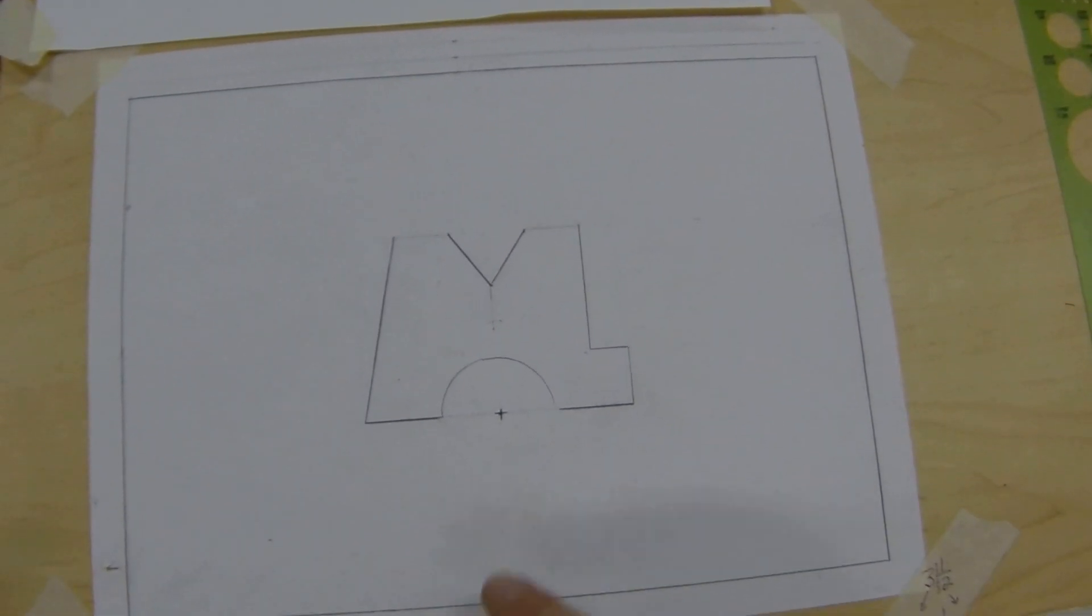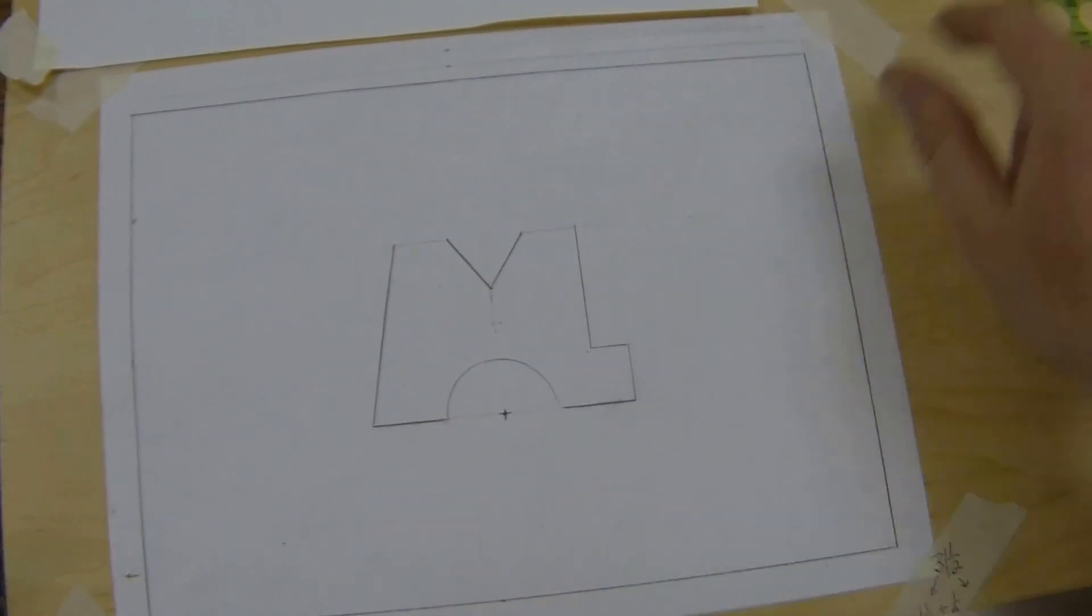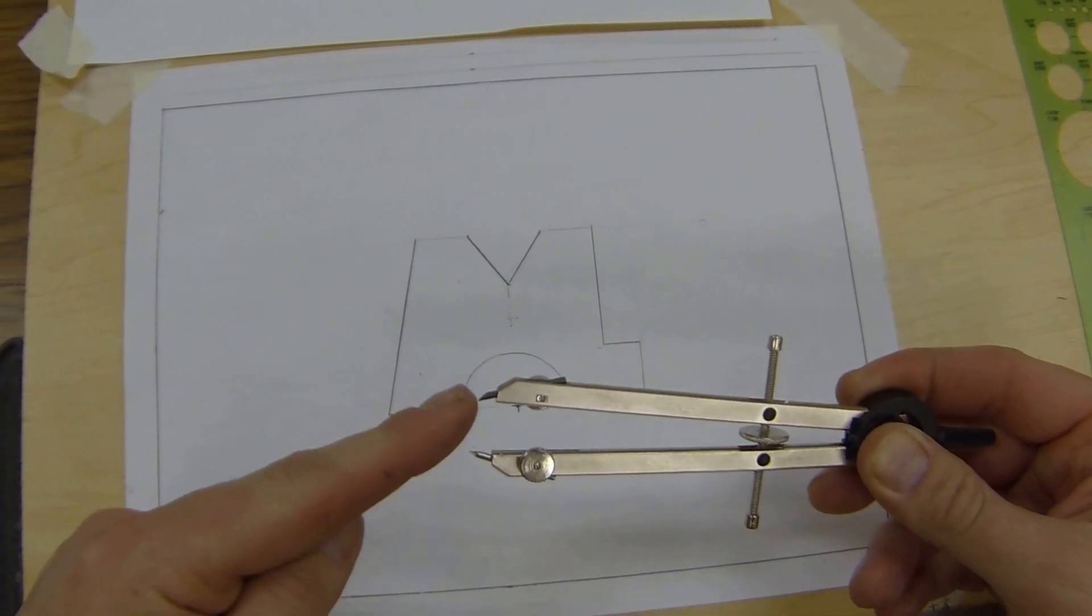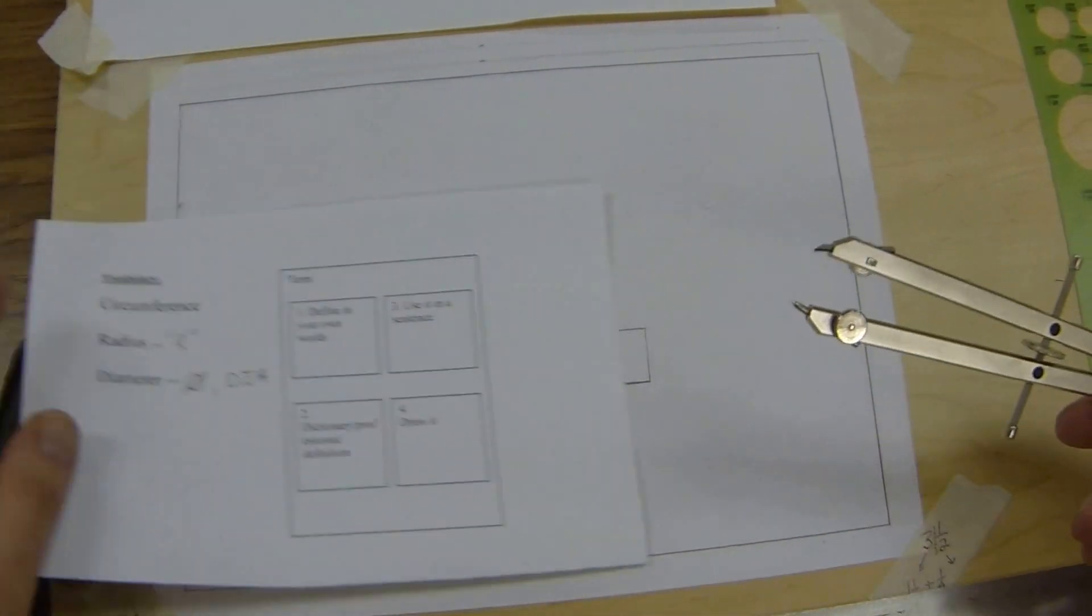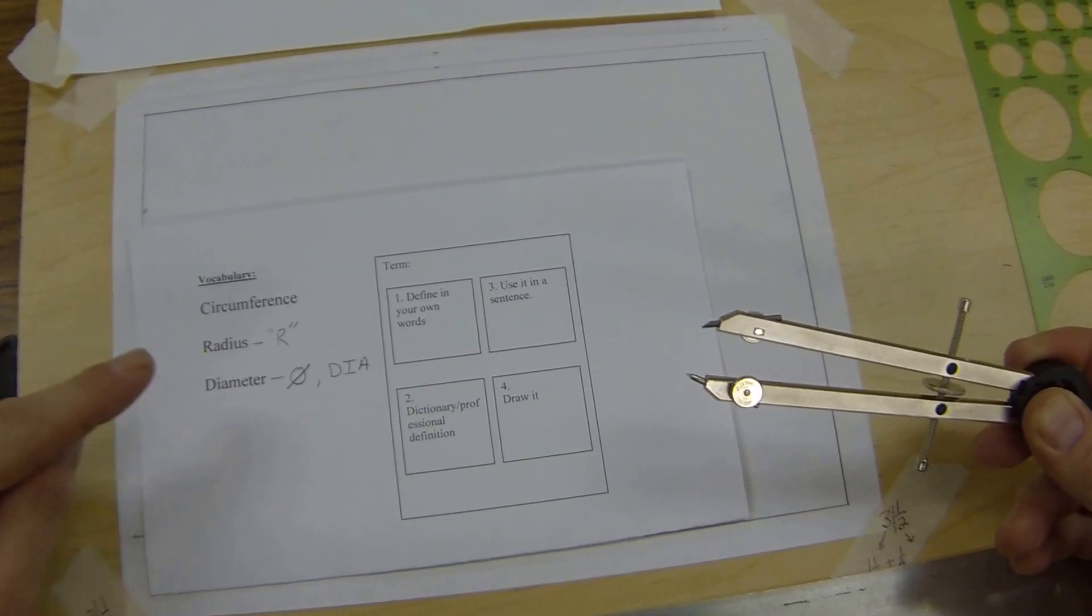Alright guys, we're back in action. Last video I showed you how to use a bow compass and set it up from the distance of the center of the circle to the outside edge. You should know that definition as to which one of the three it is.